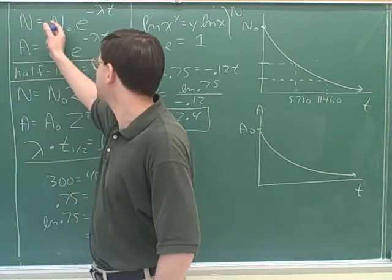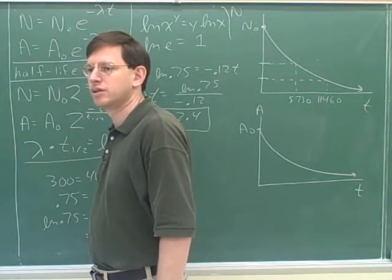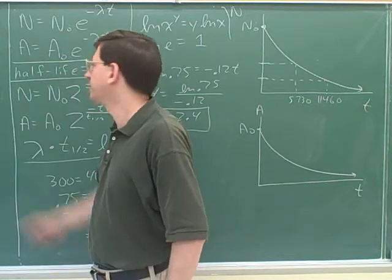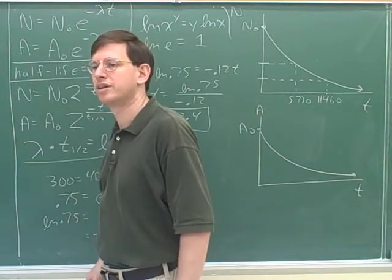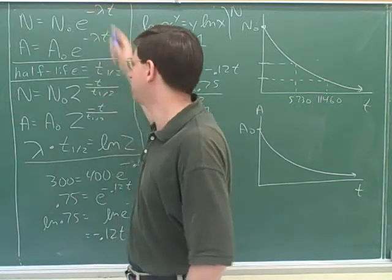So what does N sub zero stand for? The amount of isotope, the amount of nuclei. And what does N stand for? At the end, at the end of period time t. Let's take our time and review that for a second.